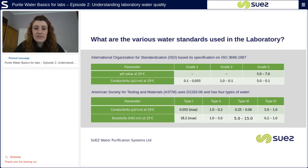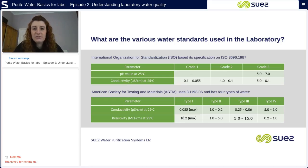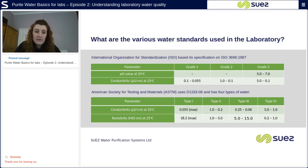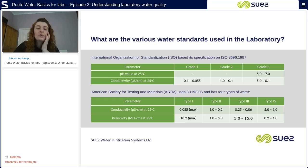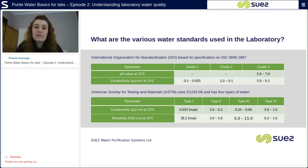The second standard is the American Society for Testing and Materials — the ASTM standard — which has four types of water: type one, type two, type three, and type four, all in roman numerals, where type one is the purest. The ASTM scale is represented by resistivity only. Grade and type of water are often used incorrectly and interchangeably, so I would recommend finding out what resistivity or conductivity is required for your application to minimise any confusion.